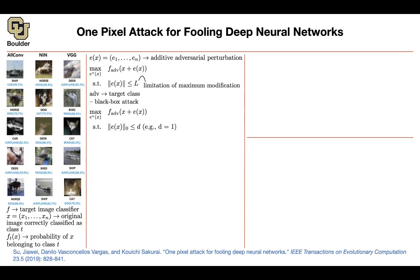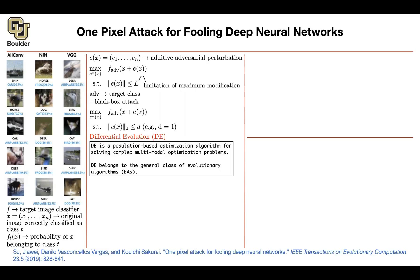We set d to be 1, meaning you are only allowed to change one pixel. Because we want a black box attack, and because the maximization problem is very hard — we don't have access to gradients, and even if we did, this is not a nice objective function to maximize due to the count constraint — we are going to use differential evolution, an optimization algorithm for solving complex optimization problems.